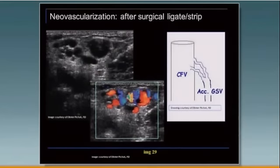Neovascularity after stripping, as we heard, will usually present with a nest of tortuous varicosities in the groin.